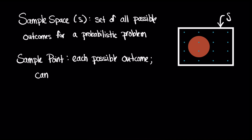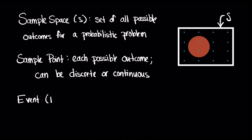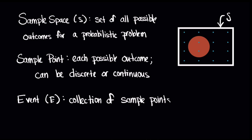Rolling a die is an example of a discrete probabilistic problem where it can only take on discrete values. The last aspect is the idea of an event, highlighted here in the orange circle, which is simply the collection of sample points. It's a bit arbitrary what event you're interested in.